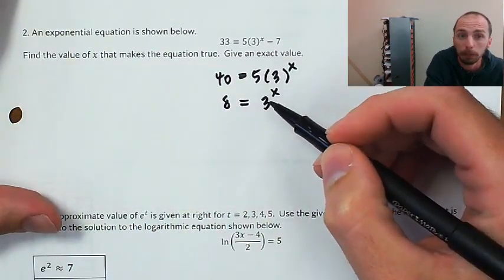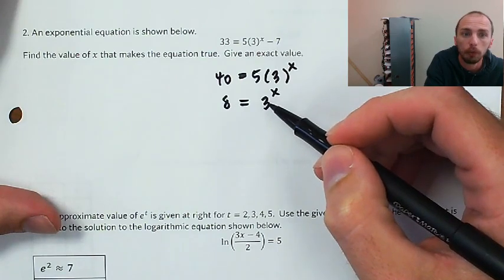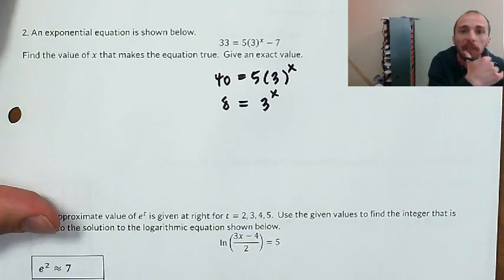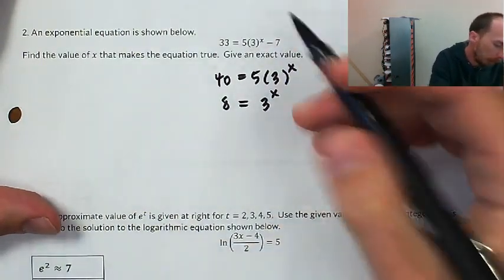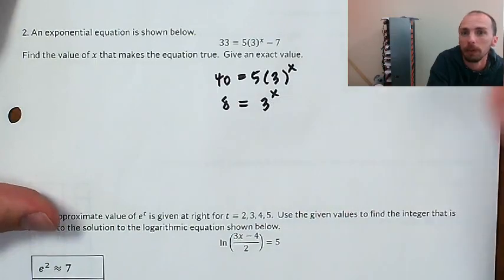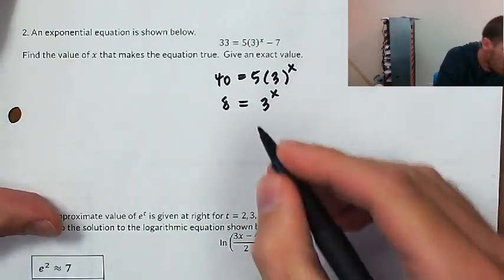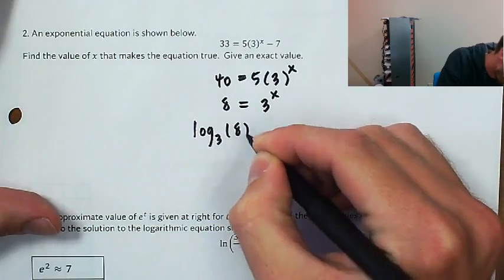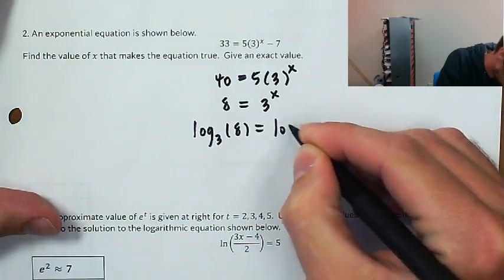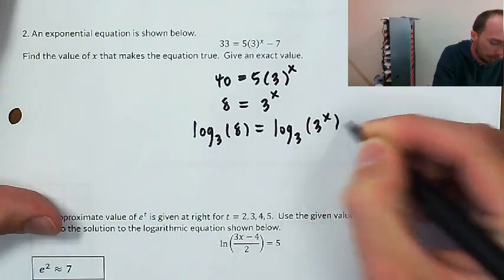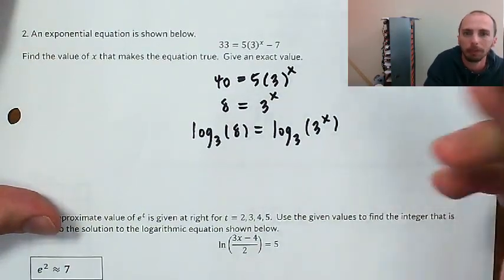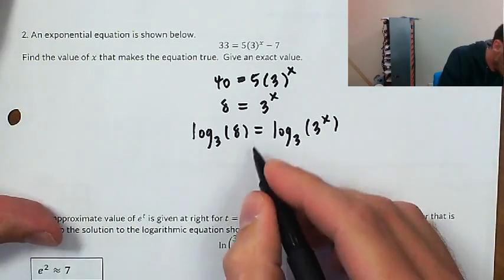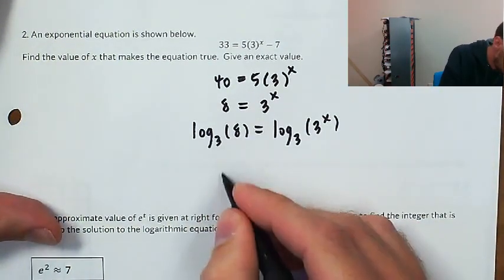Now to get this variable down out of the exponent, I'm going to need to take a log of both sides. You can take a natural log if you want, but in my class we said the base of the exponential should be the base of the log. So I'm going to take a log of base 3 of both sides. The log base 3 of 3 to the x is just going to be that thing — x — and this is log base 3 of 8.